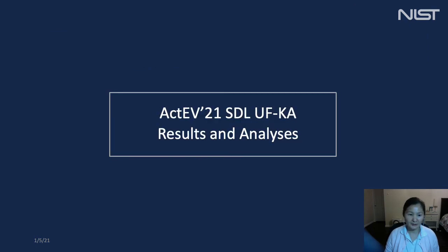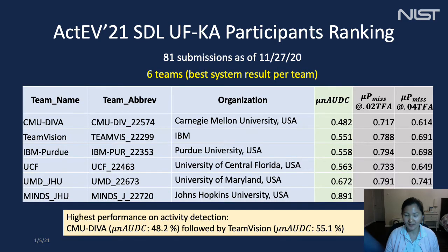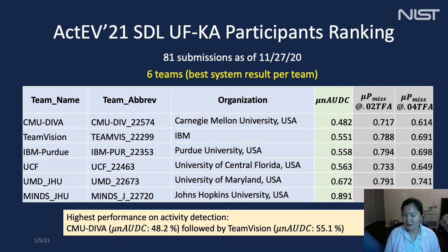Here we discuss the ACTIV-21 SDL unknown facility and known activity results and analysis. This table lists the participants for the ACTIV-21 SDL unknown facility known activity evaluation. The results are based on submissions as of November 27, 2020, so some newer participants may not be listed. We had a total of 81 submissions from six organizations. The mean NAODC results show that CMU DBA has the highest NAODC value, followed by team Vision.